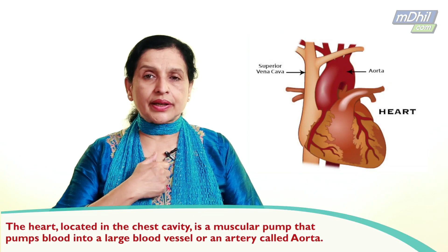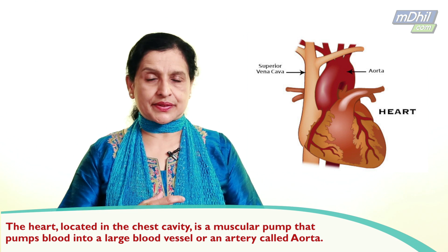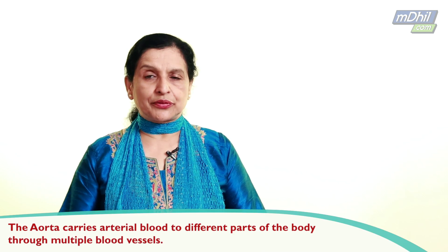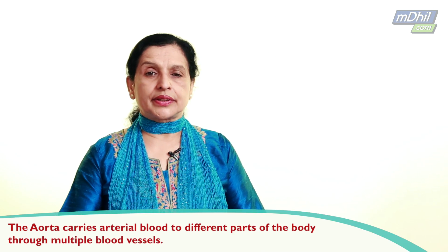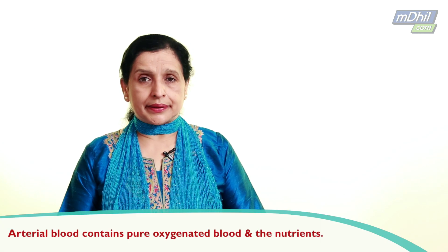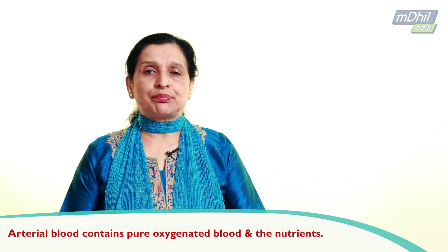I am going to give you basic information about the heart and the blood vessels in the body. The heart is a muscular pump located in the chest cavity, and it pumps blood into a large blood vessel or an artery called the aorta. Through multiple blood vessels, the aorta carries blood into the different parts of the body, and the blood it carries is called arterial blood because it contains pure oxygenated blood.